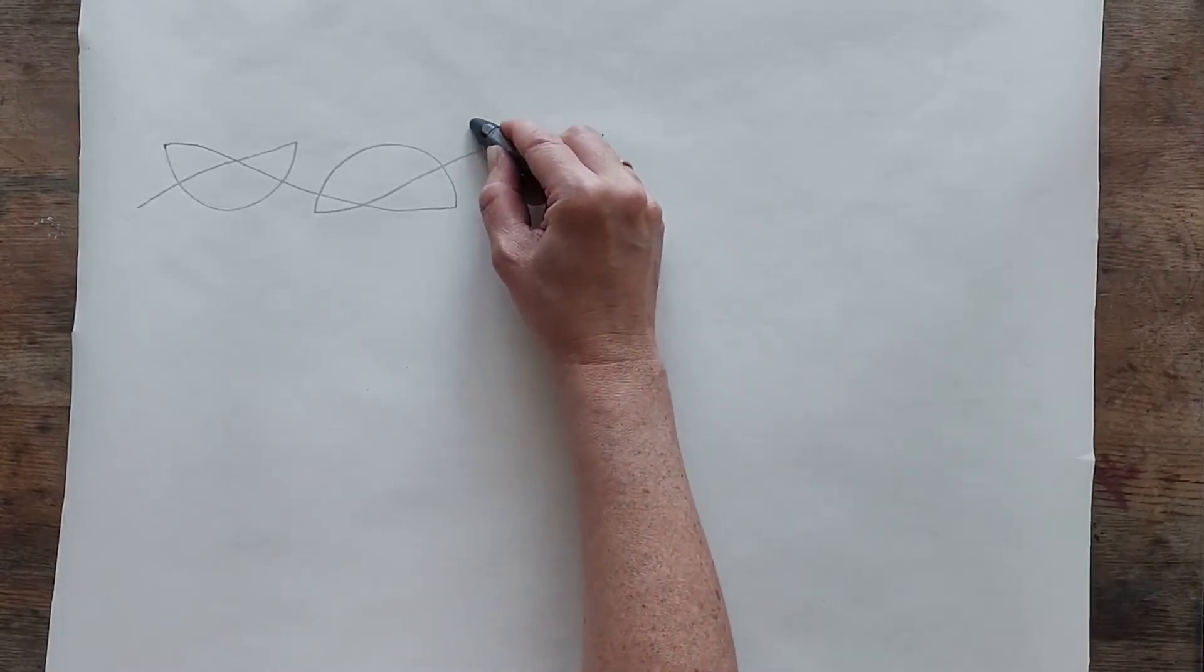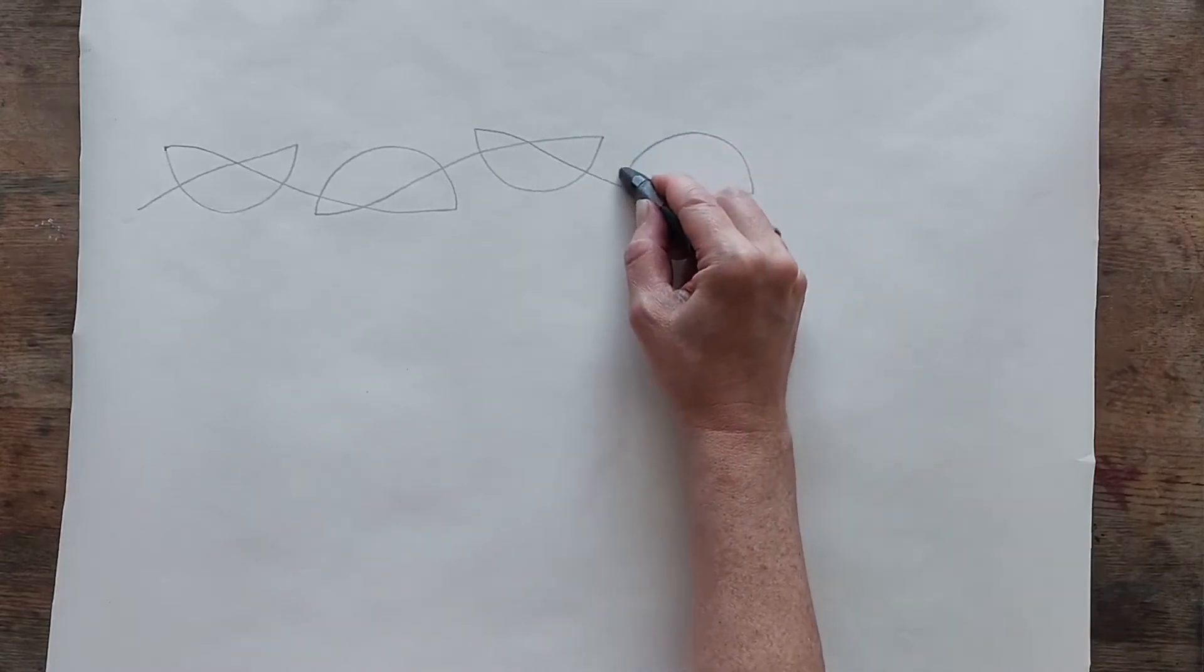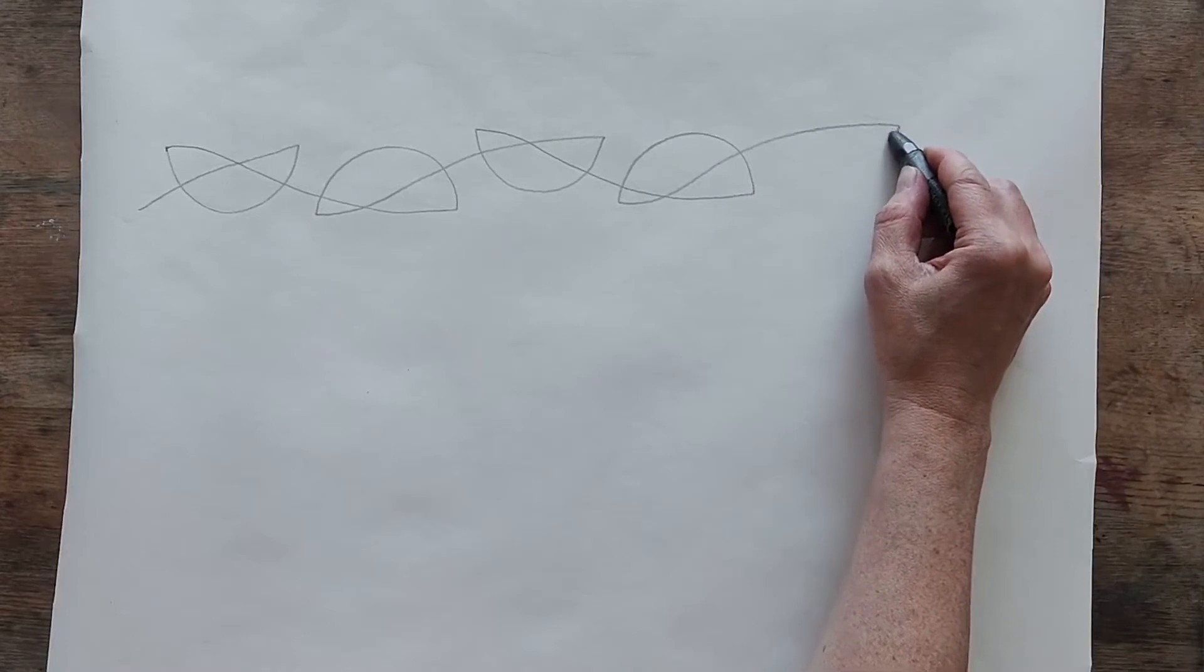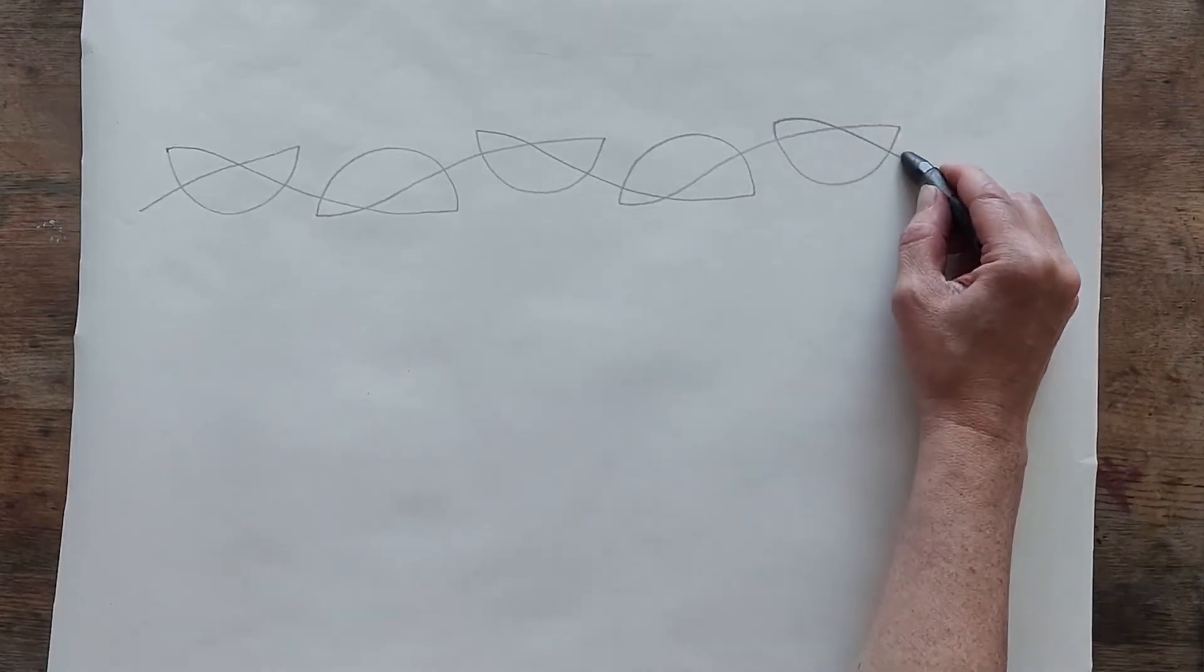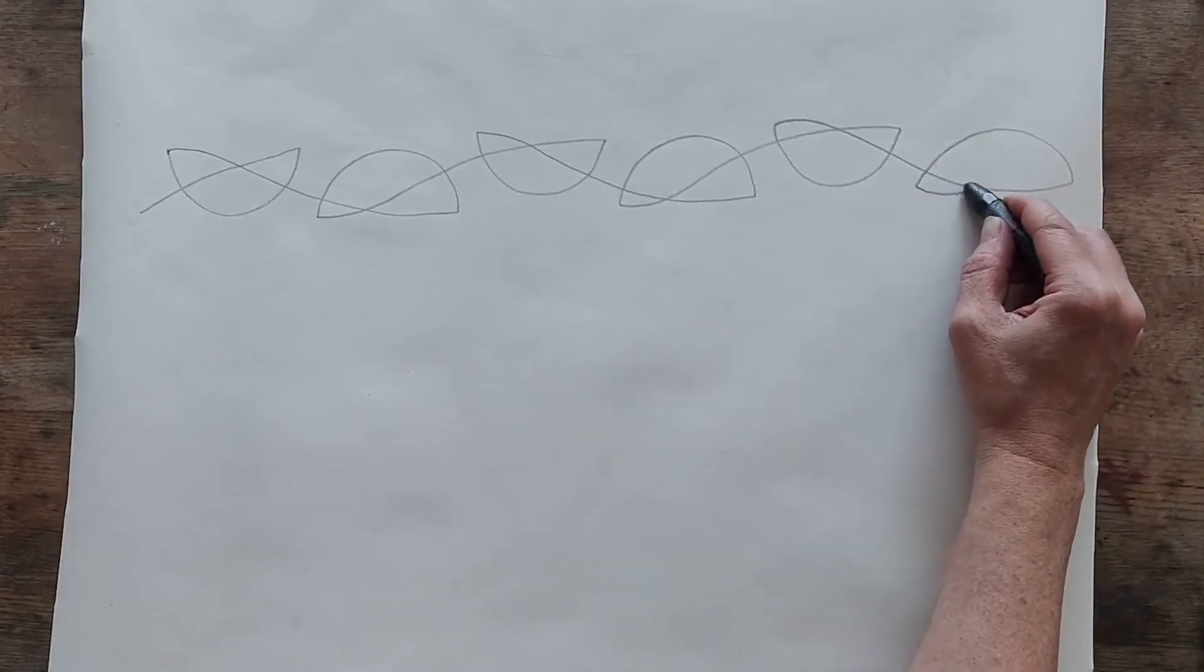And then we draw a knot facing down the way, and a knot facing up the way, and a knot facing down the way.